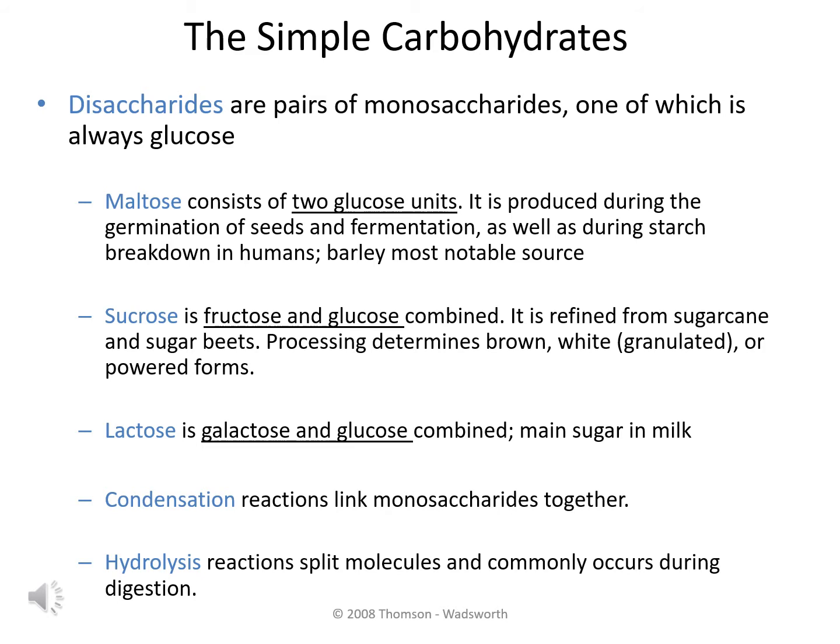The second category of the simple carbohydrates are the disaccharides, which are two monosaccharides linked together. One of these monosaccharides is always going to be glucose. The first disaccharide to note is maltose. Maltose is a combination of glucose plus glucose. When starch is broken down in our GI tract, maltose is produced. Also, when seeds germinate and during the fermentation process, maltose is produced.